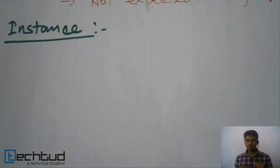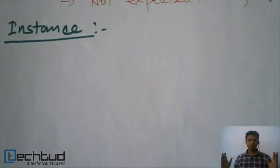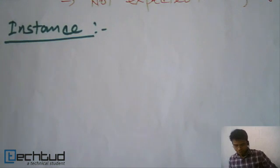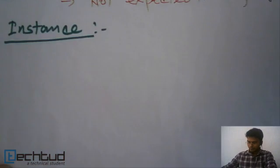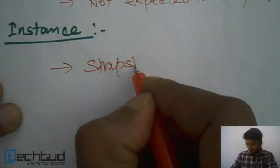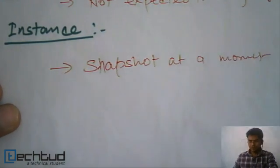For example, you pause all the transactions to a database table. Once you have a database with an application, multiple transactions might be going on together. You pause all the transactions for a moment and take a snapshot of the database. That snapshot at that moment we refer to as an instance. So instance is basically a snapshot at a moment.